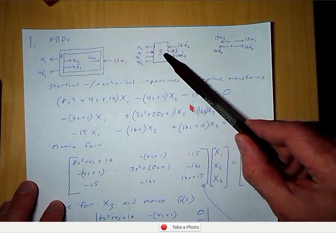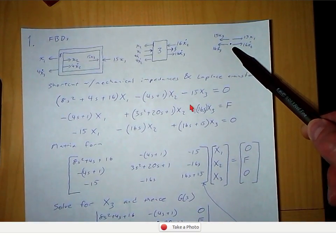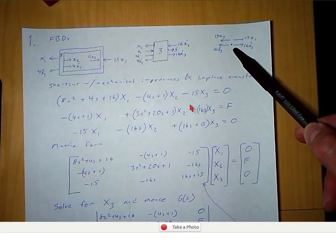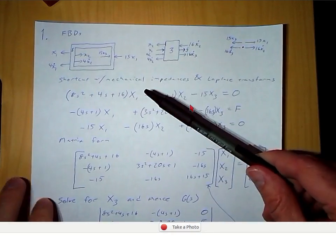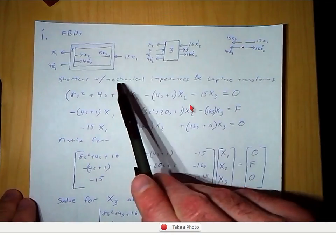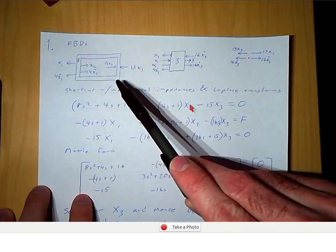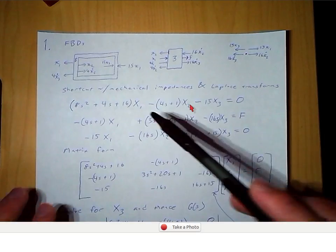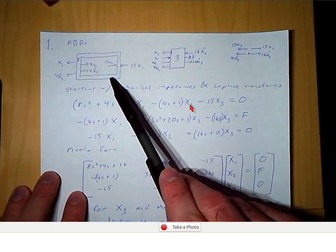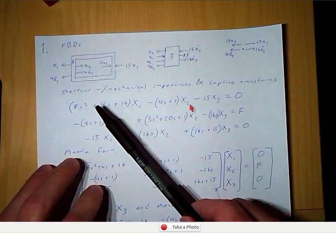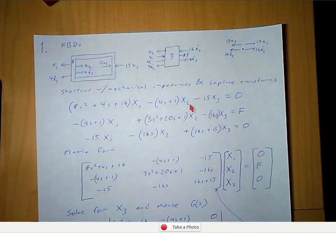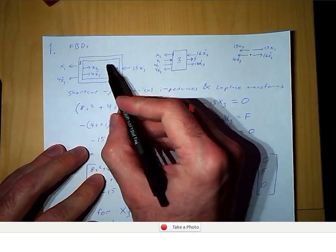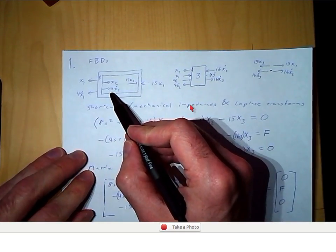So here's the outer mass. This isn't really a mass, but this point is associated with the motion x3. I just did it for completeness in case you wanted to refer to it. So we've got the box, and let me just talk about this free body diagram quickly.